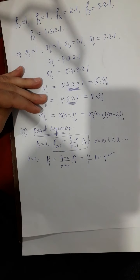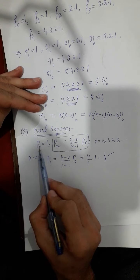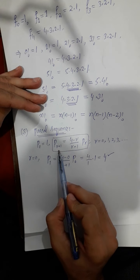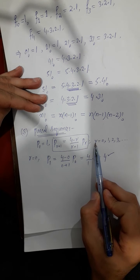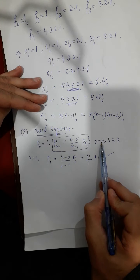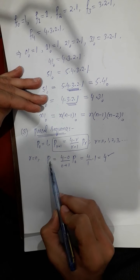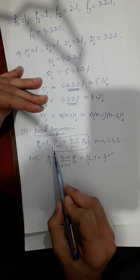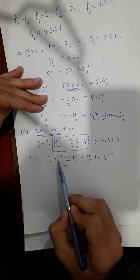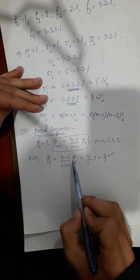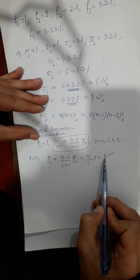Next, we have a Pascal sequence defined as P0 equals to 1, and P(R+1) equals to (4 minus R) divided by (R plus 1) times PR, where R starts from 0. When we put R equals to 0 in this general term, we get P1 equals to (4 minus 0) divided by (0 plus 1) times P0, which gives 4 by 1, and since P0 equals 1, we get P1 equals 4.